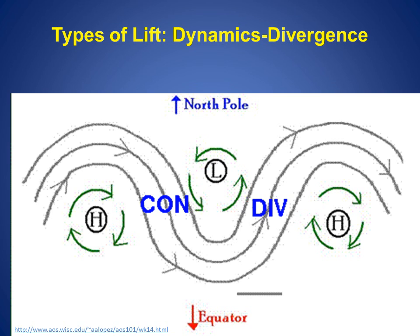Where do we see convergence and divergence in the upper levels? The jet stream is shown following the gray arrows. We typically see convergence of air in the upper levels of the atmosphere to the west of the trough, as denoted by the blue CON or convergence. This convergence occurs where more air comes into the area than leaves, and leads to sinking air and drier conditions at the surface on the back side of the trough of the low pressure area.